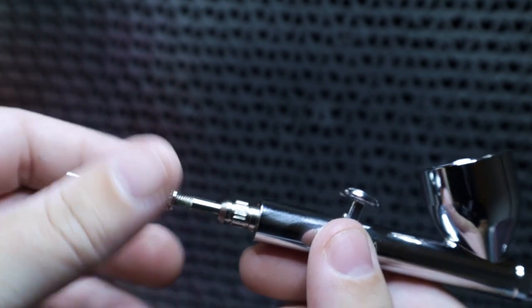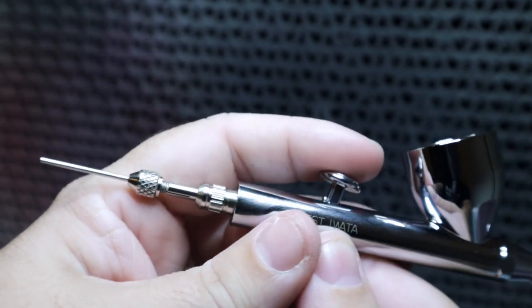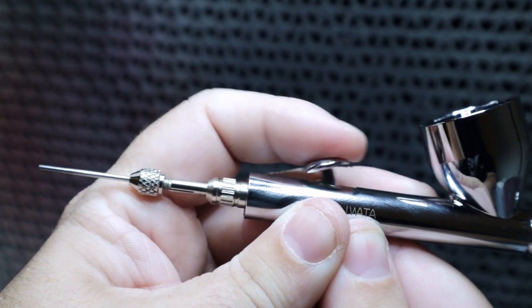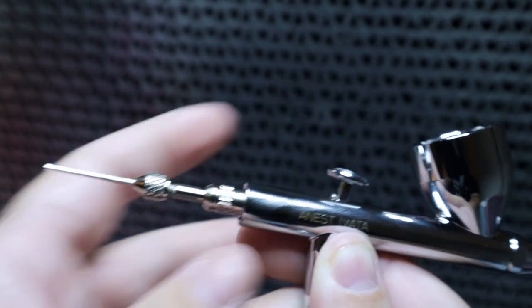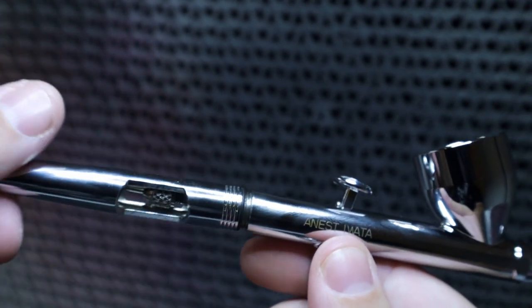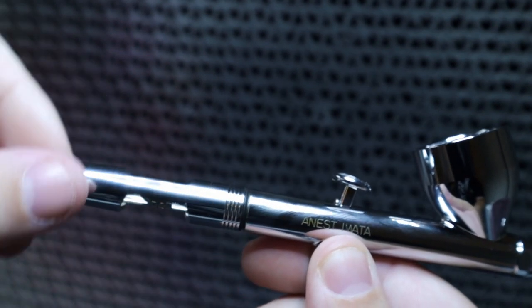After that, we'll put on our needle chucking nut. This is also a good time to check to make sure that our trigger is engaging the needle properly. Once we're sure that the trigger is engaging the needle properly, we can thread on the final body piece and then call our airbrush clean.